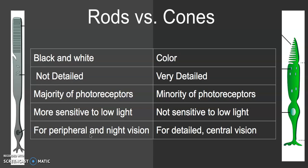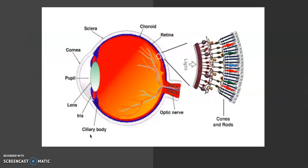Cones are just the opposite — they provide very detailed, vibrant color vision. If you're reading a book or focusing on something right in front of you, you have very detailed vision, and that comes from cones. They're the minority of photoreceptors — about 300,000 — and they're not as sensitive in low light, which is why we don't see color as well in the dark. Cones are more concentrated in the middle, providing central and detailed vision.